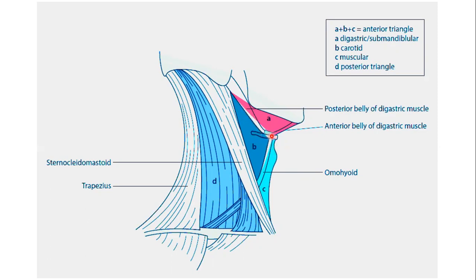This triangle is further subdivided into four triangles — four sub-divisions — by two muscles: the omohyoid and the digastric muscles. The omohyoid divides this anterior cervical region, or the anterior triangle of the neck, into four further sub-divisions.